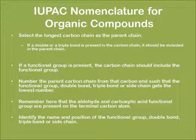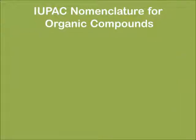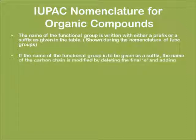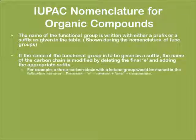Identify the name and position of the functional group, double bond, triple bond, or side chain. The name of the functional group is written with a prefix or suffix as given in the table shown earlier. If the name is given as a suffix, the name of the carbon chain is modified by deleting the last 'e' and replacing it with the appropriate suffix.